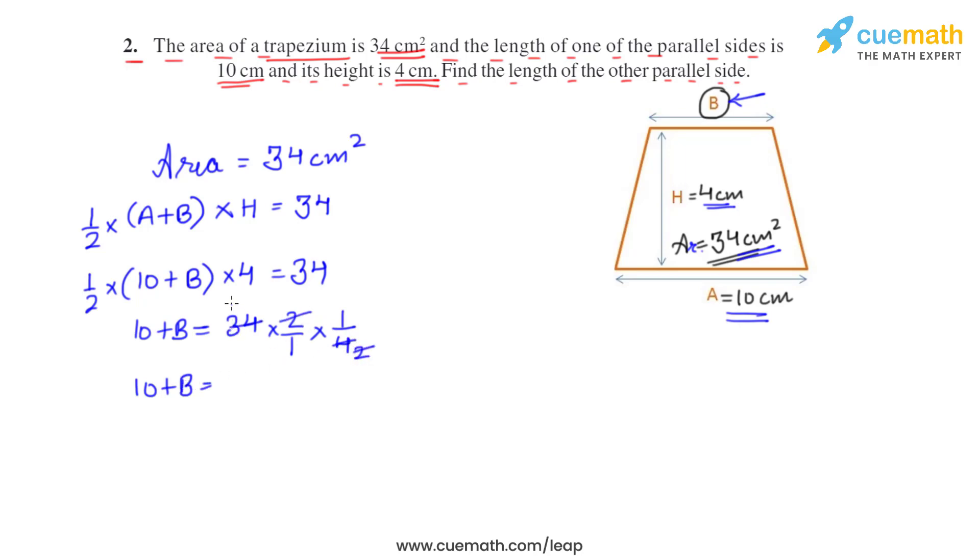So 10 plus b is equal to 17. Take 10 to the right side, it will be subtracted, so b is equal to 17 minus 10 which is 7 centimeters.